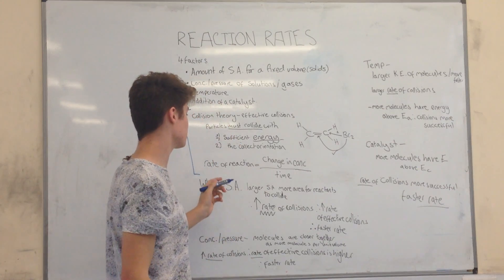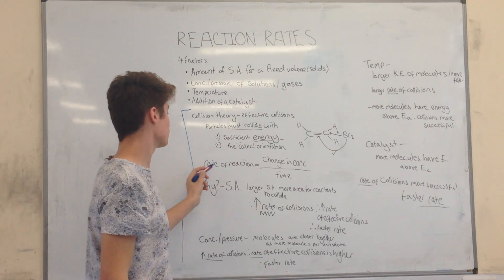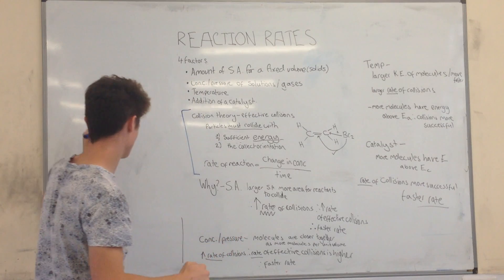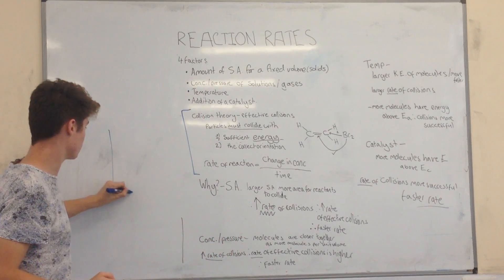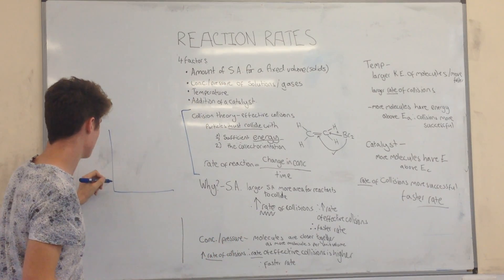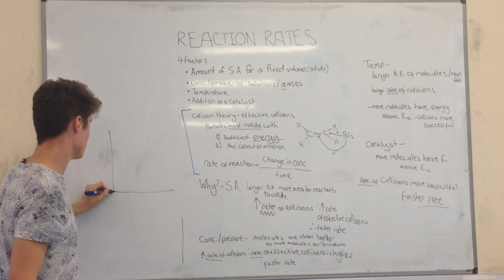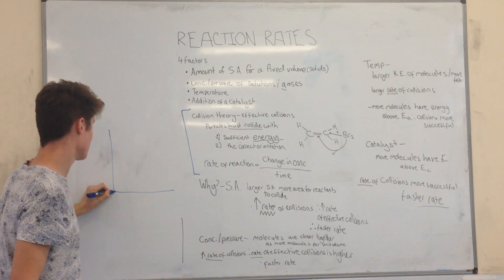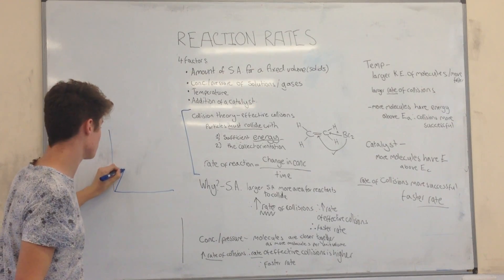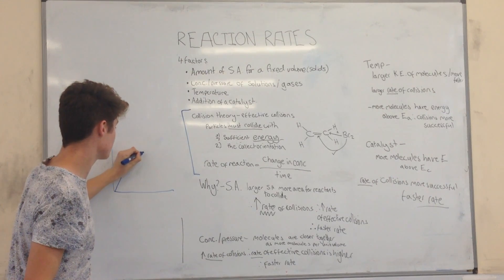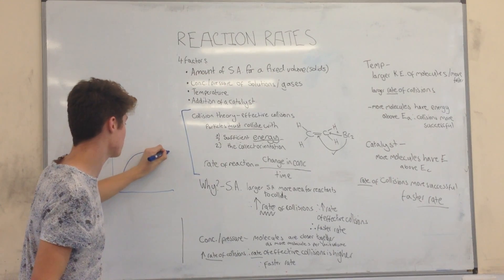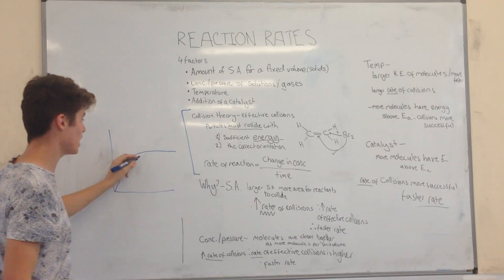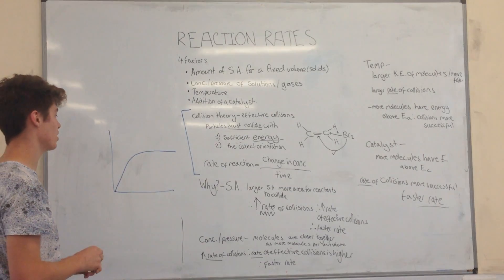You can represent this graphically on a graph. For example, if you're measuring for the products, the concentration of products will gradually increase as the reaction occurs.